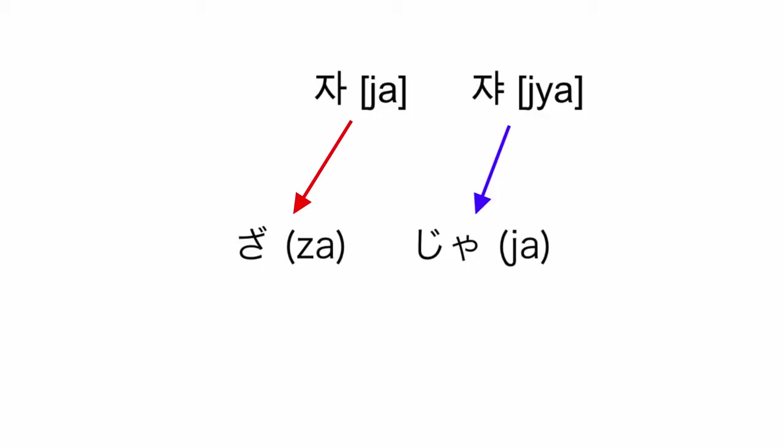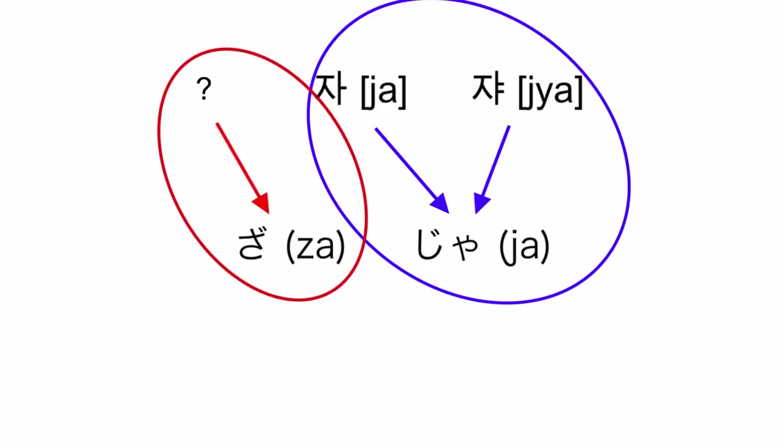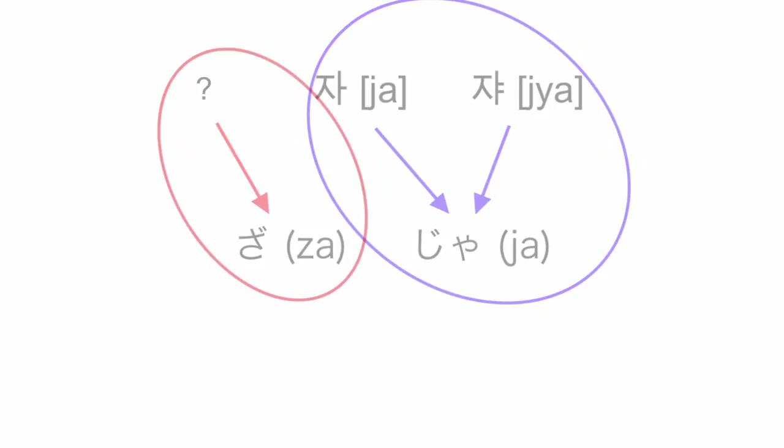For example, using one Korean sound for one Japanese sound and another Korean sound for the other Japanese sound. But this strategy does not work well, because both Korean sounds end up sounding like the same sound in Japanese. We are missing one of the sounds here.